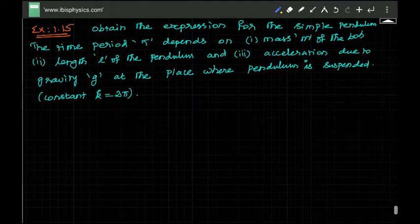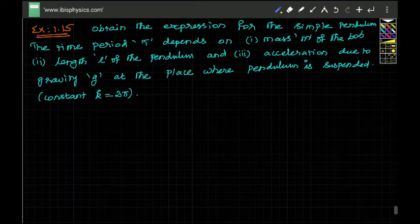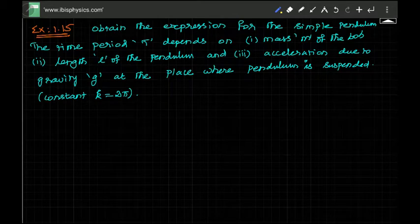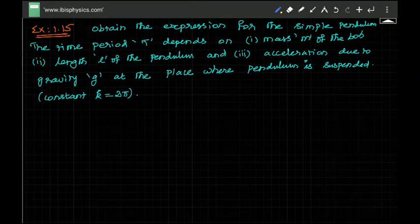Example 1.15 is to obtain the expression for time period of the simple pendulum. The time period depends on mass m, length L of the pendulum, and acceleration due to gravity g at the place where the pendulum is suspended.